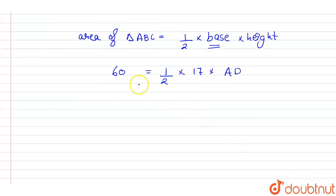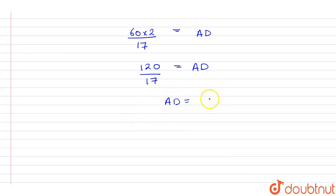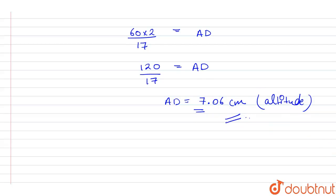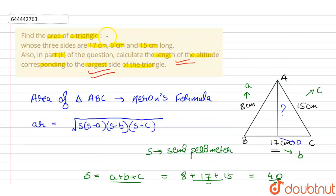We need to find the height, the base is 17 cm and the area is 60 cm². So: 60 = (1/2) × 17 × AD. Simplifying, AD = (60 × 2) / 17 = 120 / 17, which comes out to approximately 7.06 centimeters. So the altitude corresponding to the largest side is 7.06 cm and the area of the triangle is 60 cm².